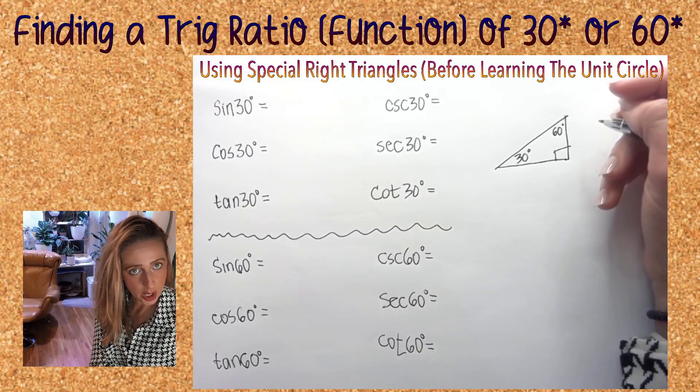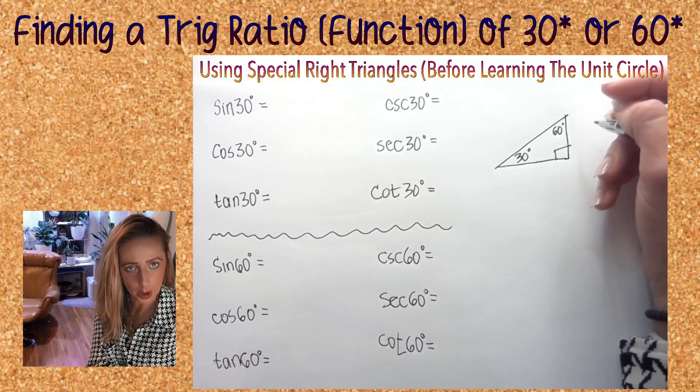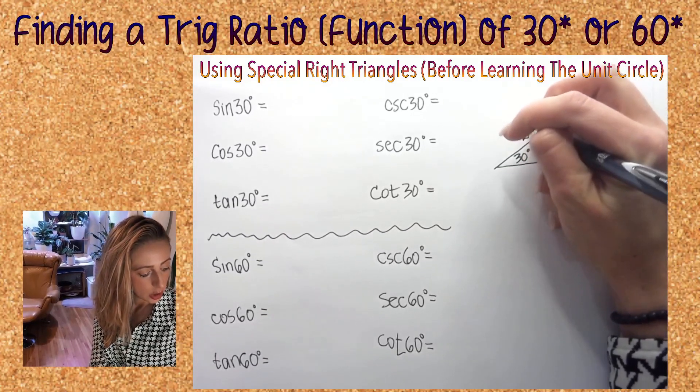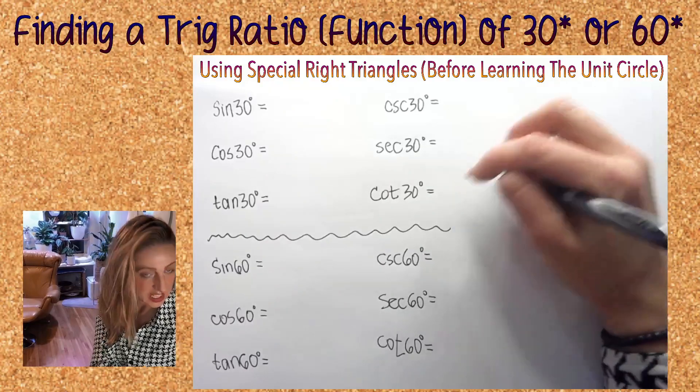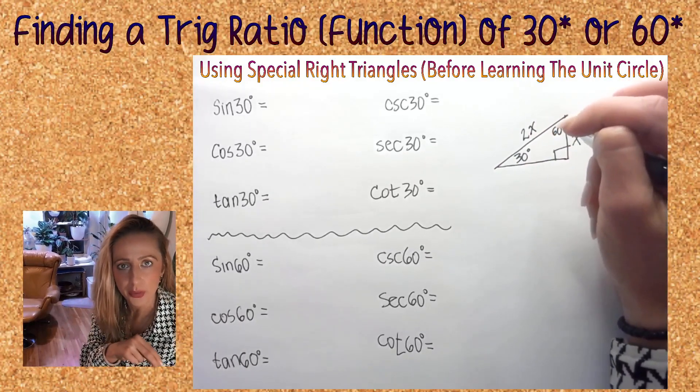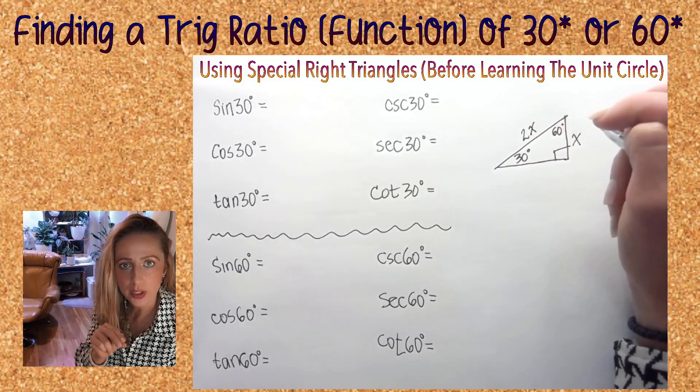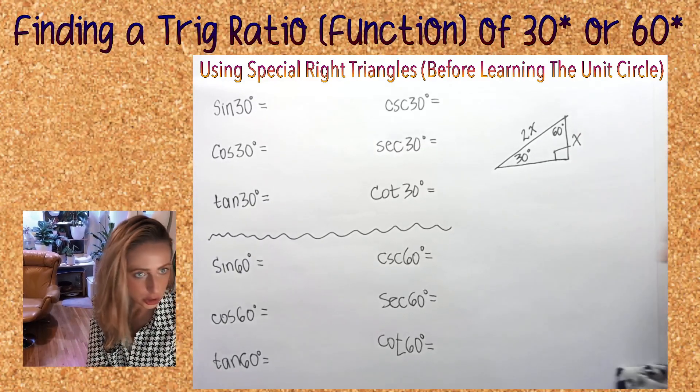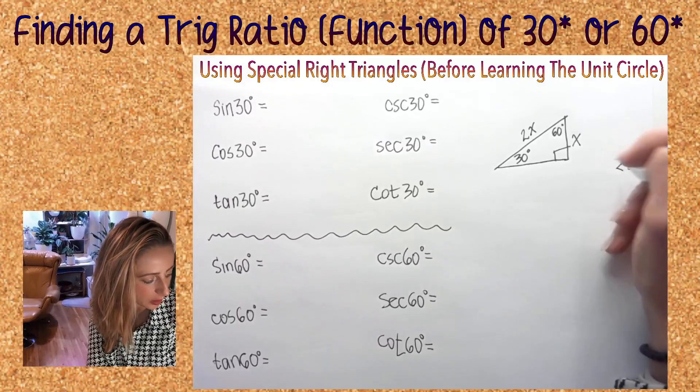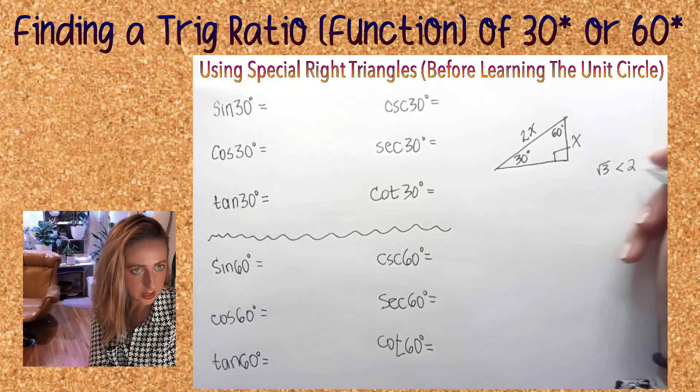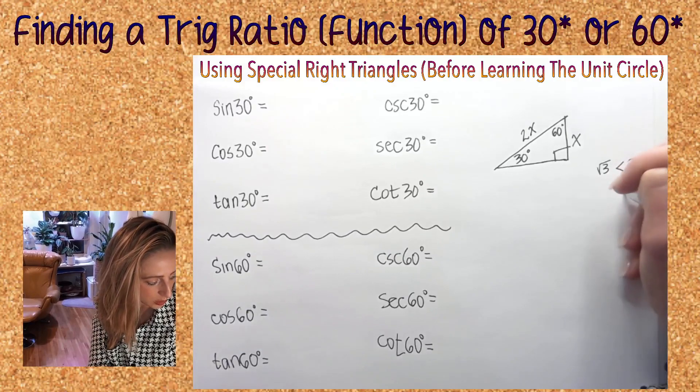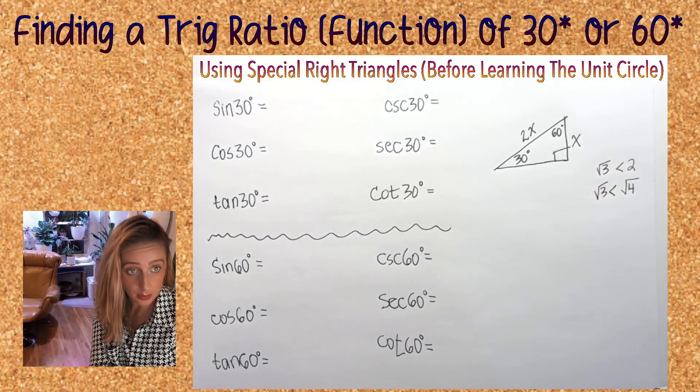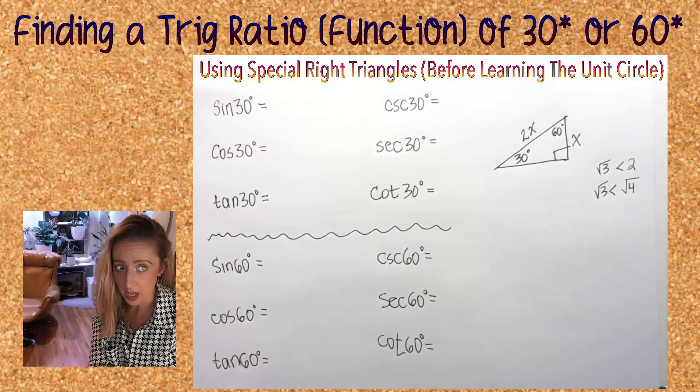This is x, two times x is the hypotenuse, and x radical three. Radical three is smaller than two because two is the same as radical four, and radical three is definitely less than radical four. The biggest side is the hypotenuse, 2x. This side is x root three.